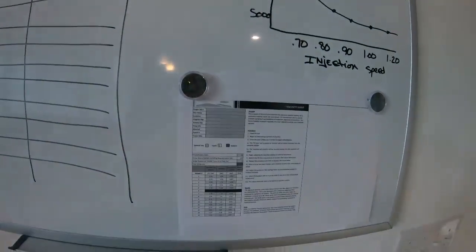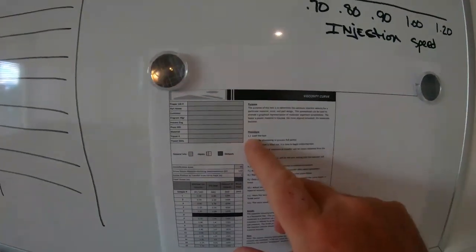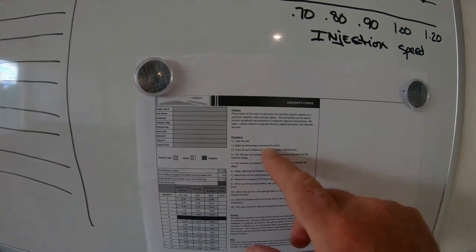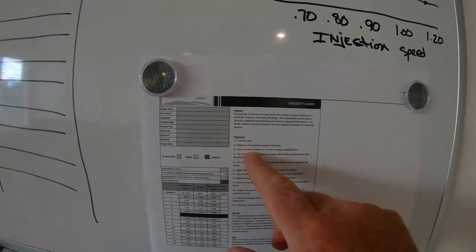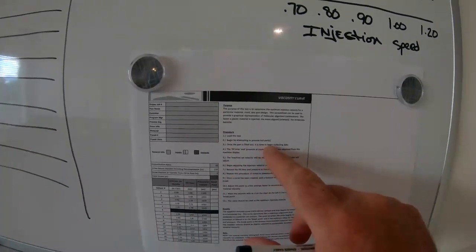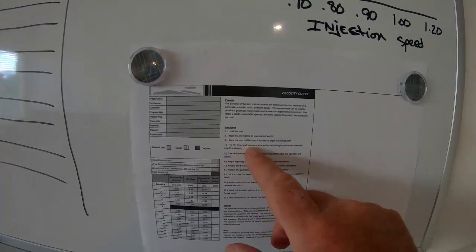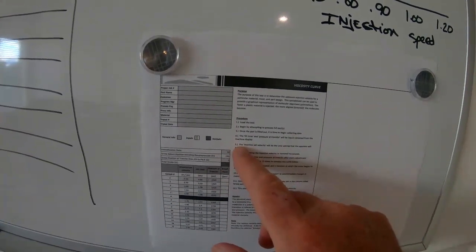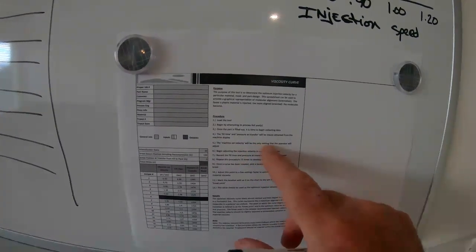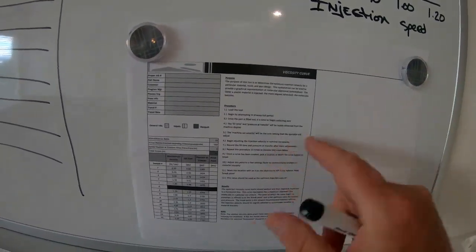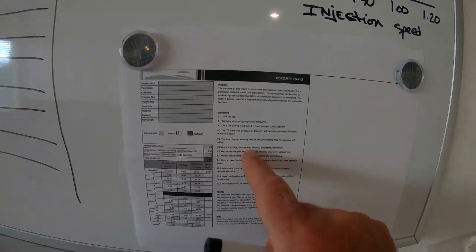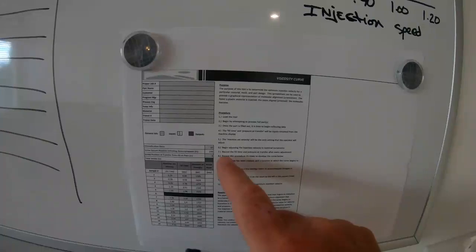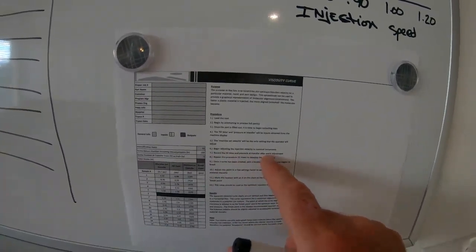Going back over this data sheet: load the tool and begin to attempt the procedure of filling full parts. Once the part is filled out, it is time to begin collecting data. The fill time and pressure at transfer will be the only inputs obtained from the machine display. The machine's injection velocity setting will be the only setting you'll be changing.